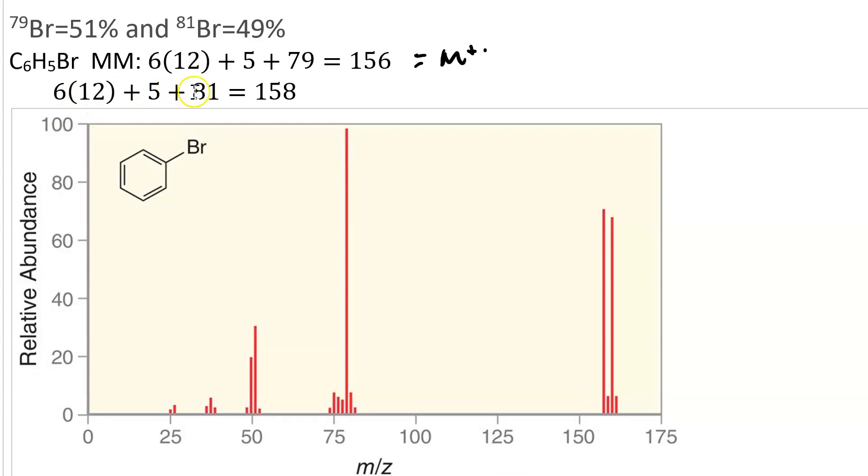And if we calculate the molar mass with a bromine-81 instead of a bromine-79, we get 158, and that is our M plus 2 peak. And their heights should be nearly equal, and indeed that's what we see. Here we've got 156 and 158.